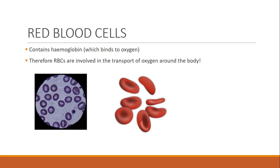Red blood cells, in a nutshell, are used to transport oxygen around the body. How do they do it? They contain hemoglobin right in the middle of their structure, which is what binds the oxygen to them. So we say blood carries oxygen, but more specifically, it's the red blood cells that contain the hemoglobin which binds to the oxygen, allowing it to be transported around the body.